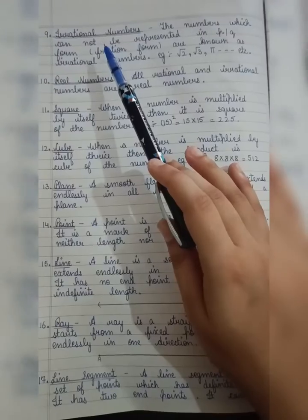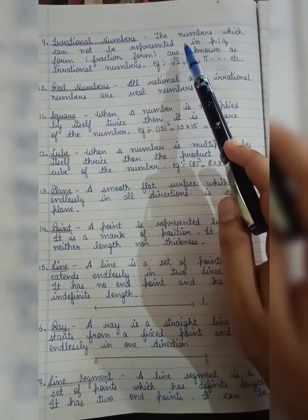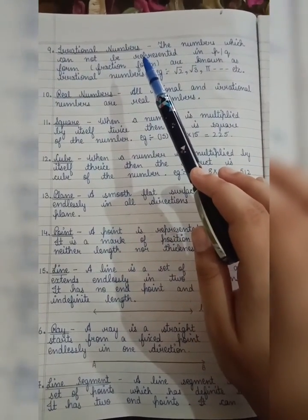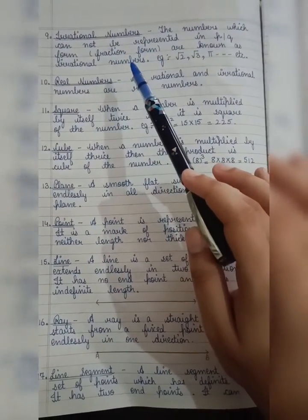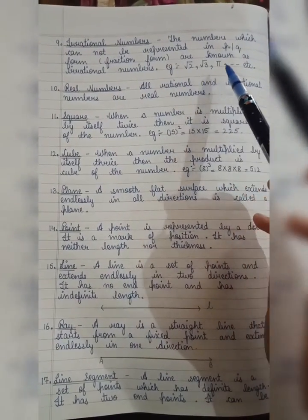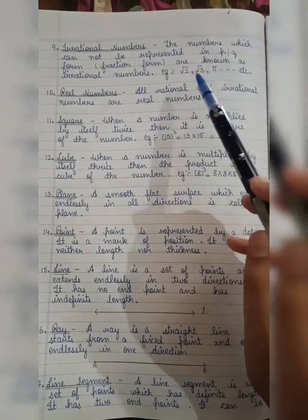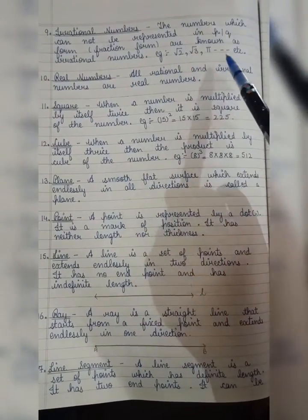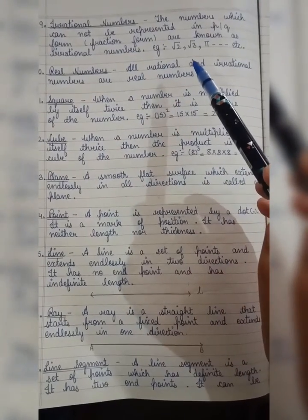Irrational numbers - the numbers which cannot be represented in p by q form are known as irrational numbers. Example: root 2, root 3, pi, etc. Real numbers - all rational and irrational numbers are known as real numbers.